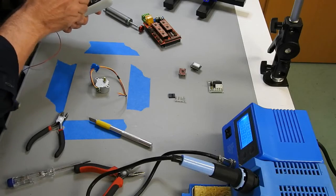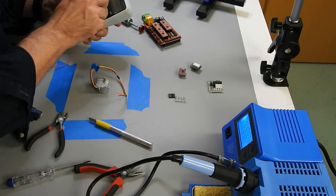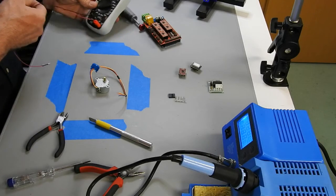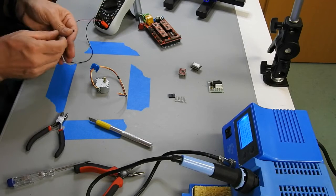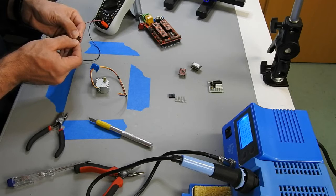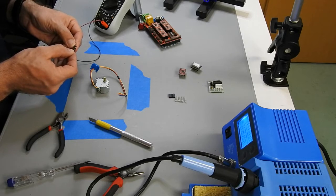A multimeter is very helpful in that case. We have one here with a continuity check, which basically means if we both get contact, we get an audio signal.